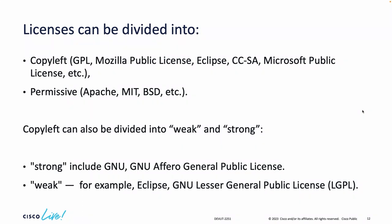In general, licenses can be divided into copyleft and permissive. Copyleft licenses include GPL, Mozilla Public License, Eclipse, EUPL, and Microsoft Public License. Permissive licenses include Apache, MIT, and BSD. NetMiko, for example, is licensed under a copyleft license.